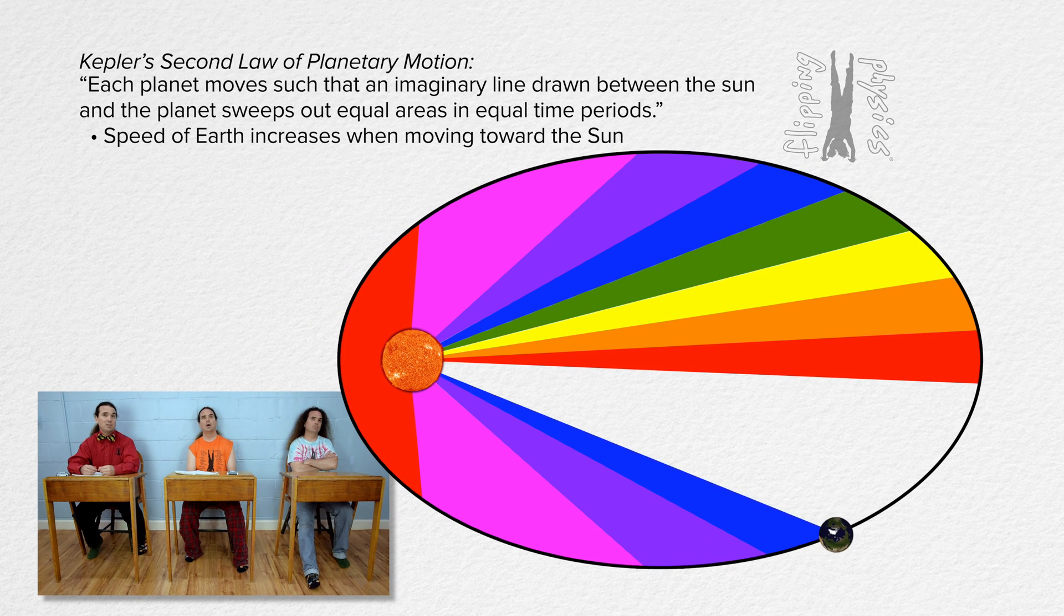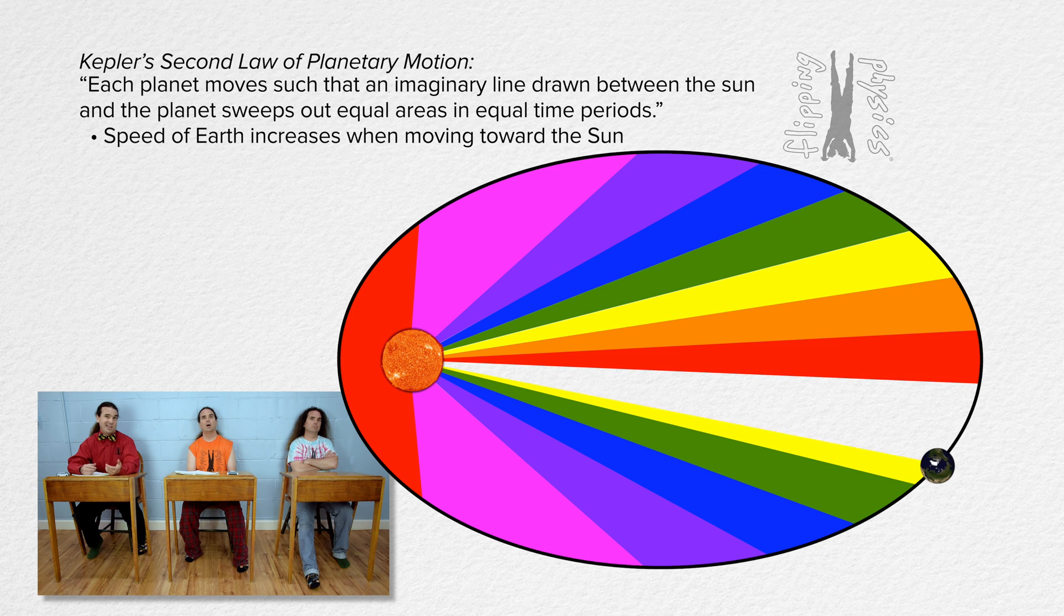That means that the speed of the Earth, for example, increases as it gets closer to the sun. Correct Billy.